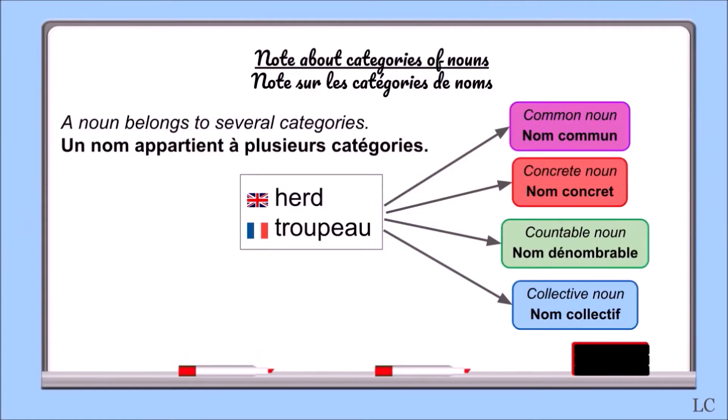One last note about categories of nouns: a noun belongs to several categories. For example, the last noun we talked about, herd, troupeau, is a common noun, a concrete noun, a countable noun, and a collective noun.